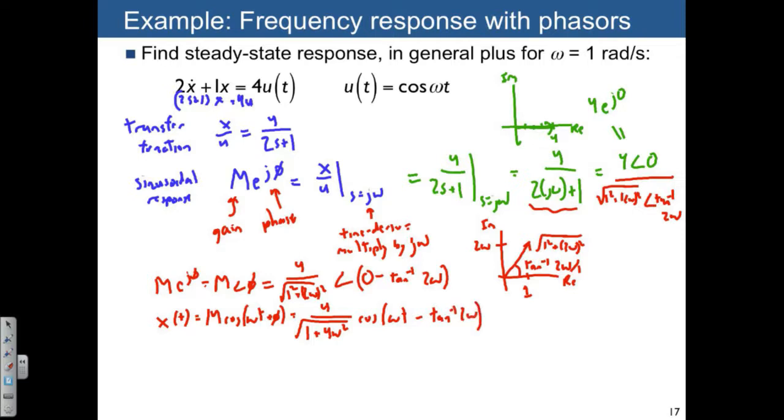Now if we were to plug in ω = 1, we can actually evaluate this. x(t) is going to be equal to 4/√5 · cos(t - arctan(2)).